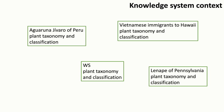Bringing it back to the lecture in which we visualized different knowledge systems existing in parallel to one another, think of it as one among many. Those listed here hold no particular significance to this lecture but just represent the value of such knowledge held by many different groups of people. For example, we might think about plant taxonomy and classification as defined by Vietnamese immigrants to Hawaii, or the Aguaruna Jivaro of Peru, or by the Lenape of Pennsylvania, or by Western scientists.